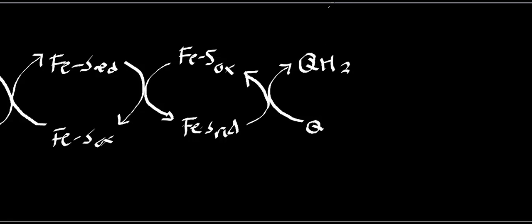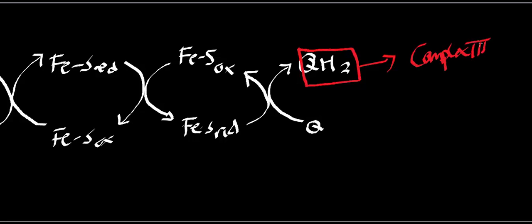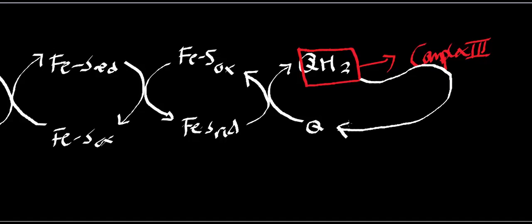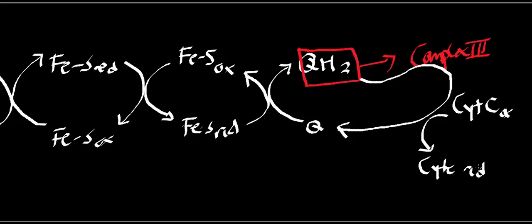I've ultimately increased the concentration of ubiquinol, and as I've mentioned before, this is going to go towards complex III — cytochrome C:ubiquinol oxidoreductase. Complex III is going to oxidize ubiquinol back to ubiquinone, and in the process cytochrome C, which was originally oxidized, is going to get reduced. Specifically, it accepts one electron at a time, and we'll look at that mechanism.